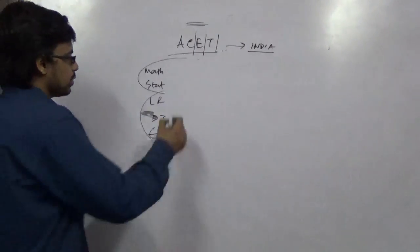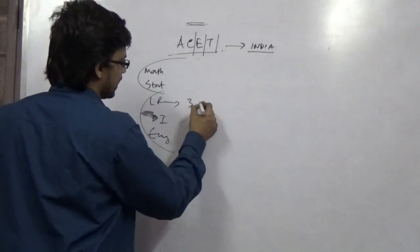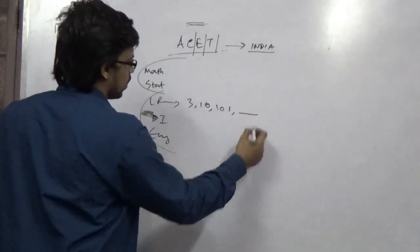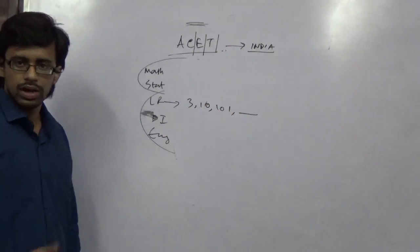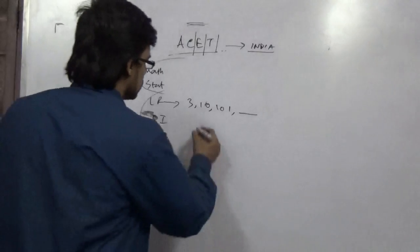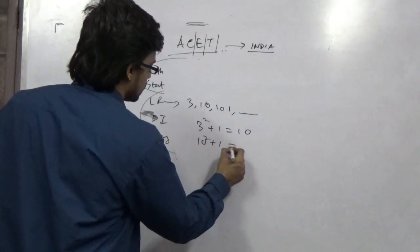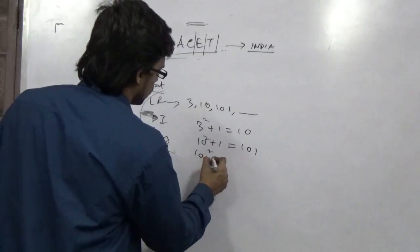Next come into logical reasoning. There will be questions like if 3 followed by 10 followed by 101, what will be the next number? This type of question. So this is like 3 square plus 1 that is 10, 10 square plus 1 that is 101, so the next one should be 101 square plus 1.